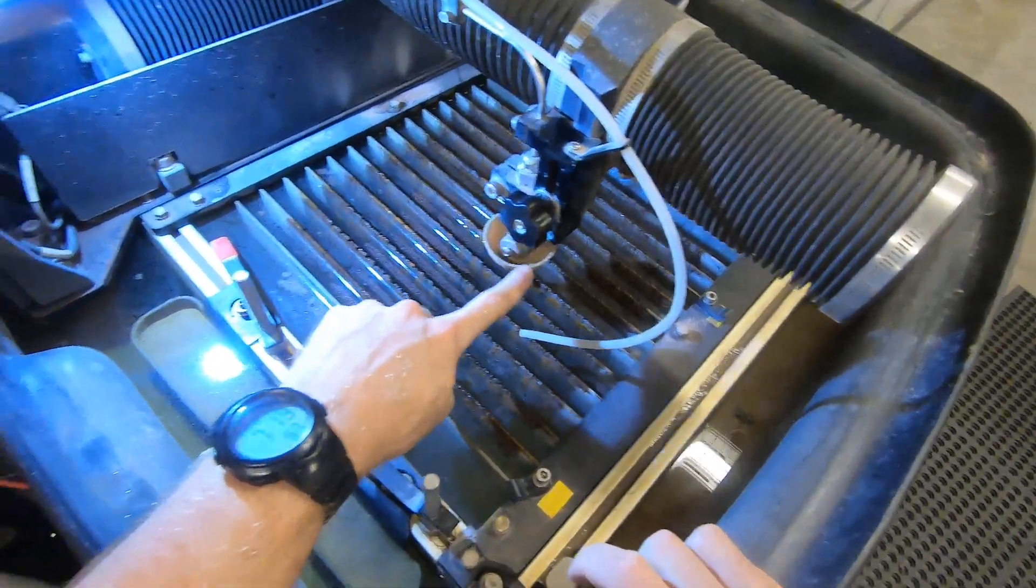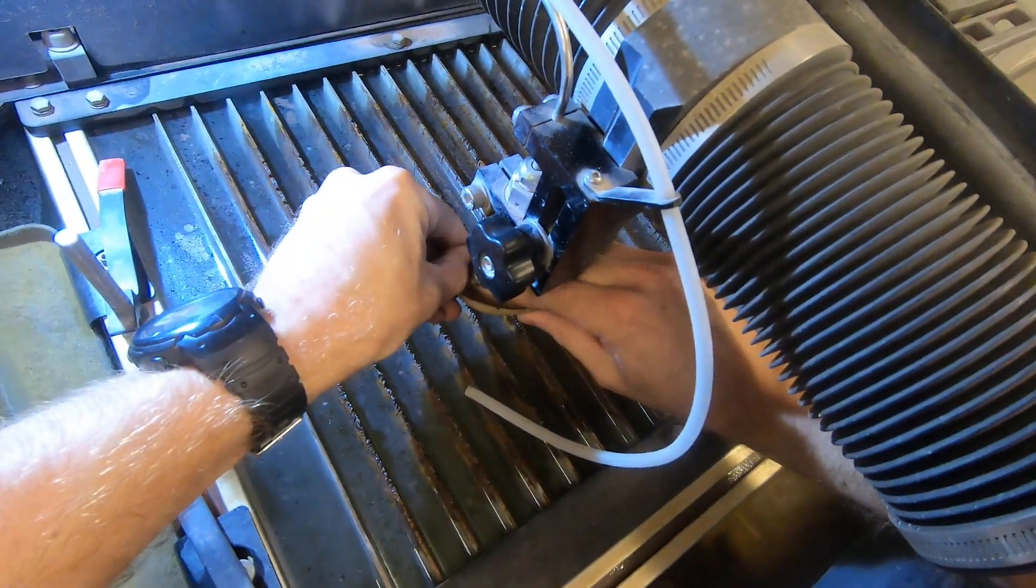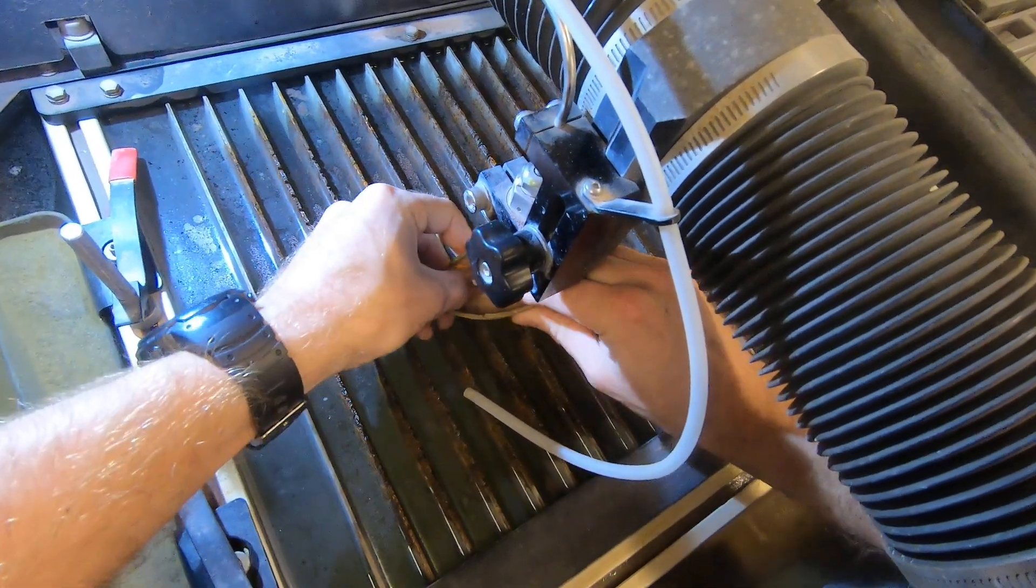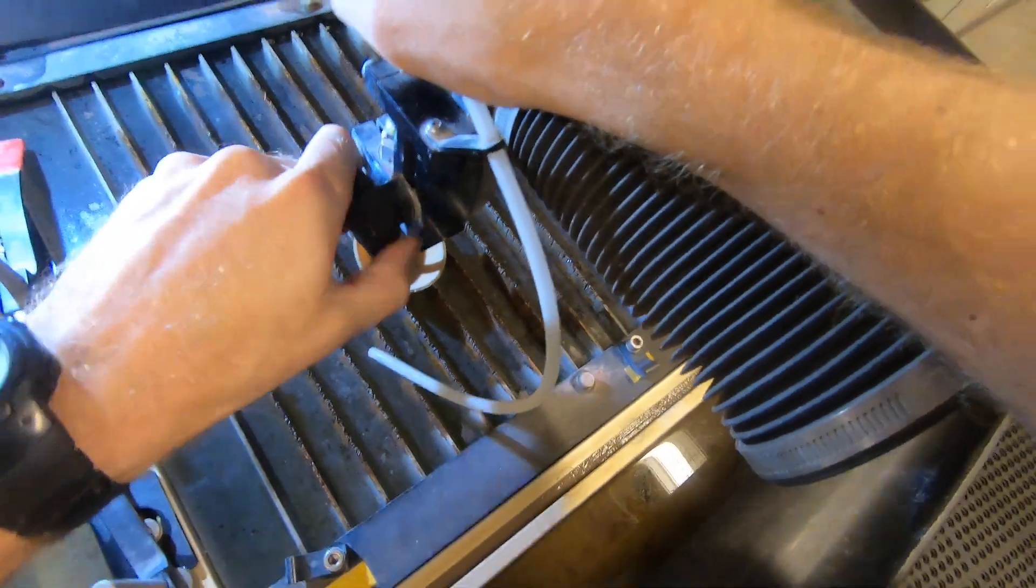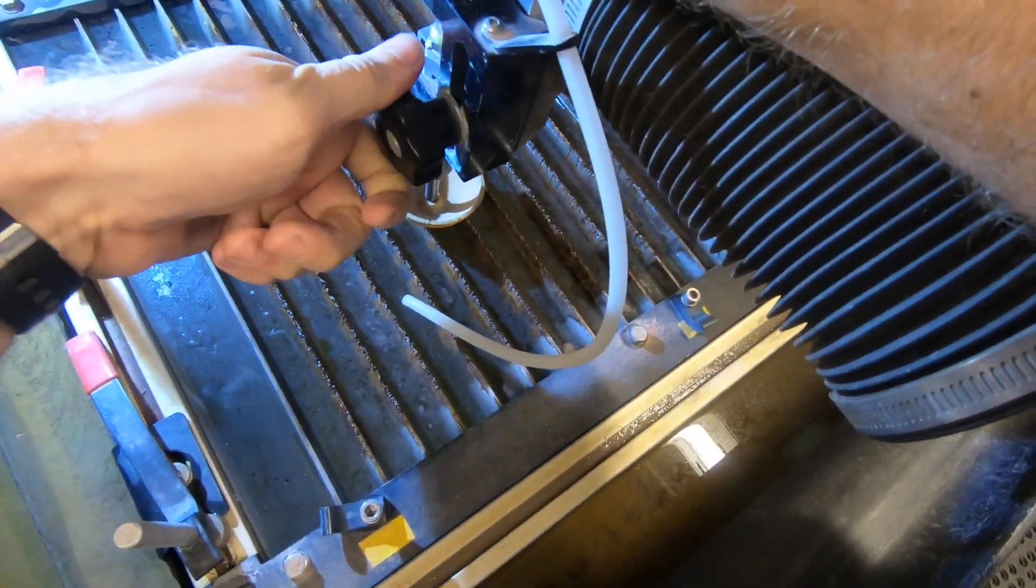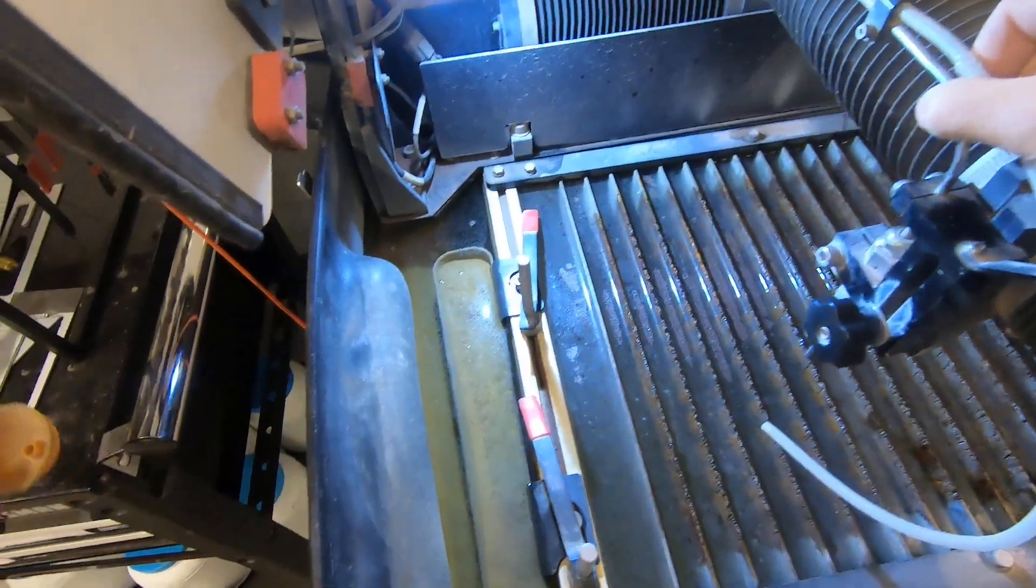Now we need to actually unclog the nozzle. I'm going to take off the shielding cup, going to raise this up, lock it in place, take off the shielding cup.